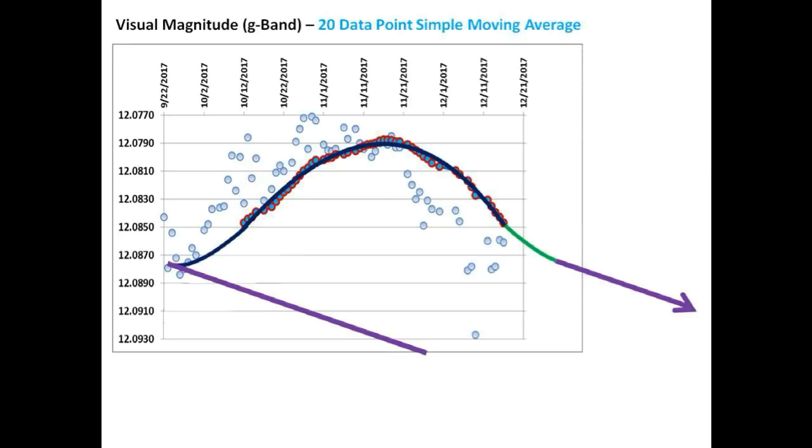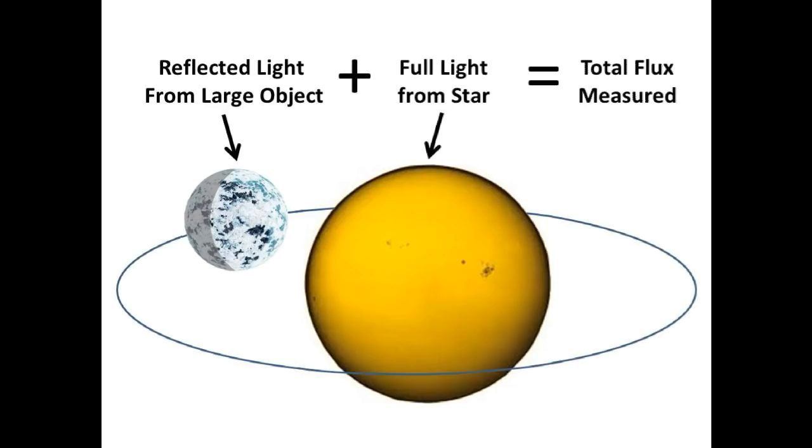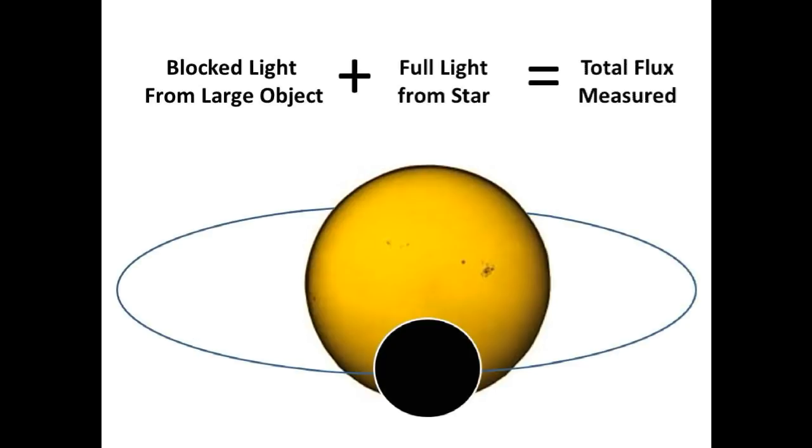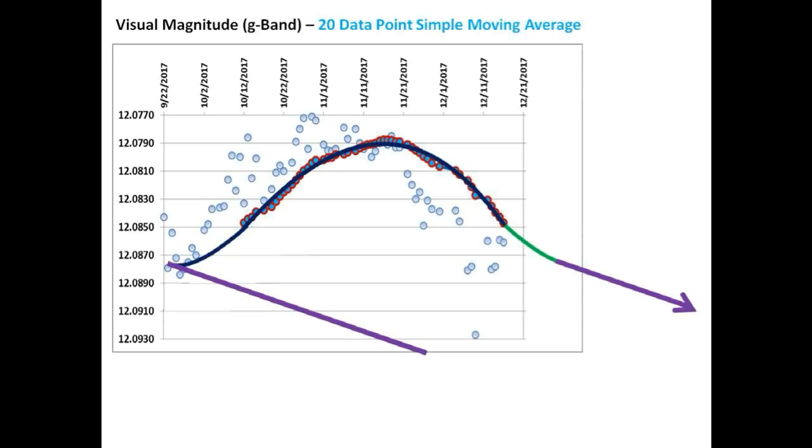The second of the two possible scenarios is that something very large in comparison with Tabby's Star became visible from our vantage point and the brightening was caused by the reflected light being added to the light from the star. The brightening was temporary because the object is in motion and is moving on, and the phases of the reflected light from the object are becoming weaker and weaker. And Tabby's Star is resorting back to the long-term dimming profile we had been in prior to the brightening event.